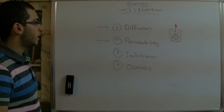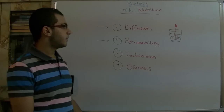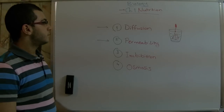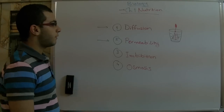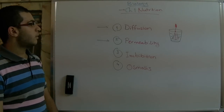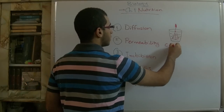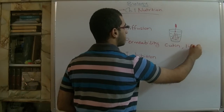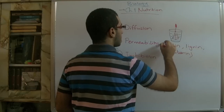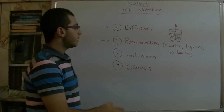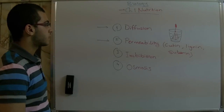We also have permeability. The permeability of the walls inside the plant differs from each other. Some walls allow all molecules to pass from outside to inside, and some are not permeable at all, while others allow the passage of some molecules and block the passage of others.